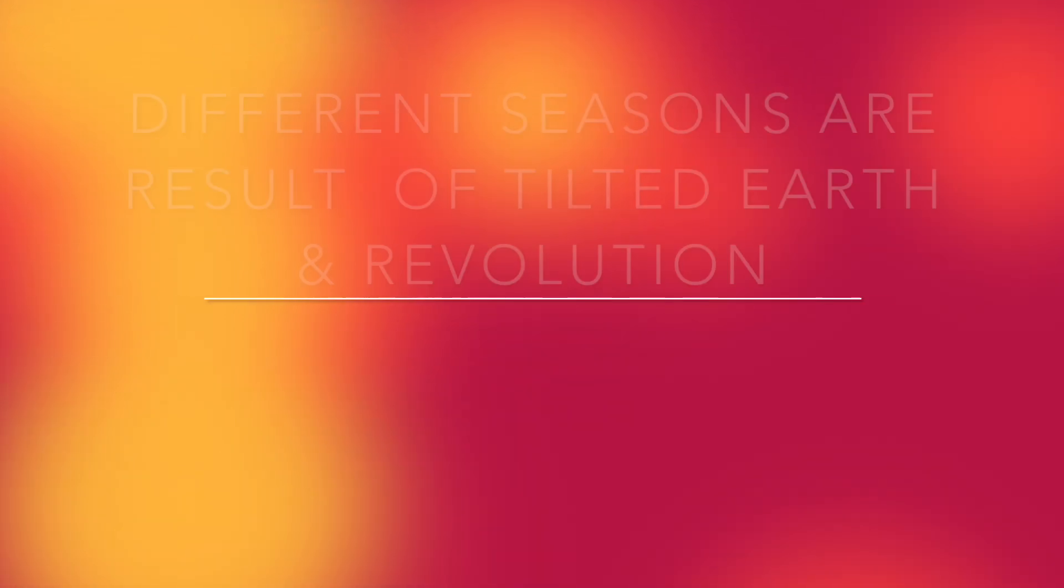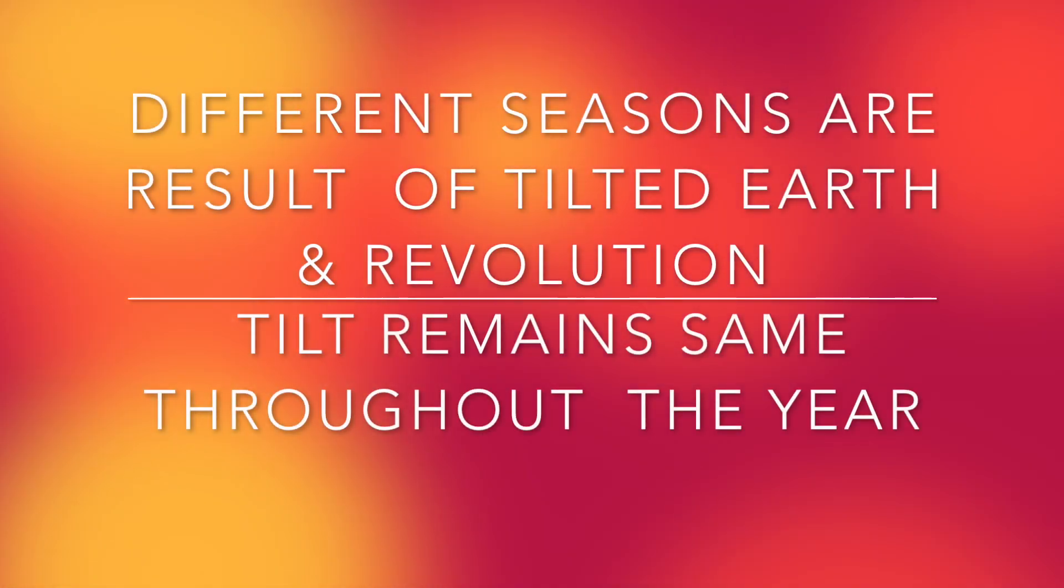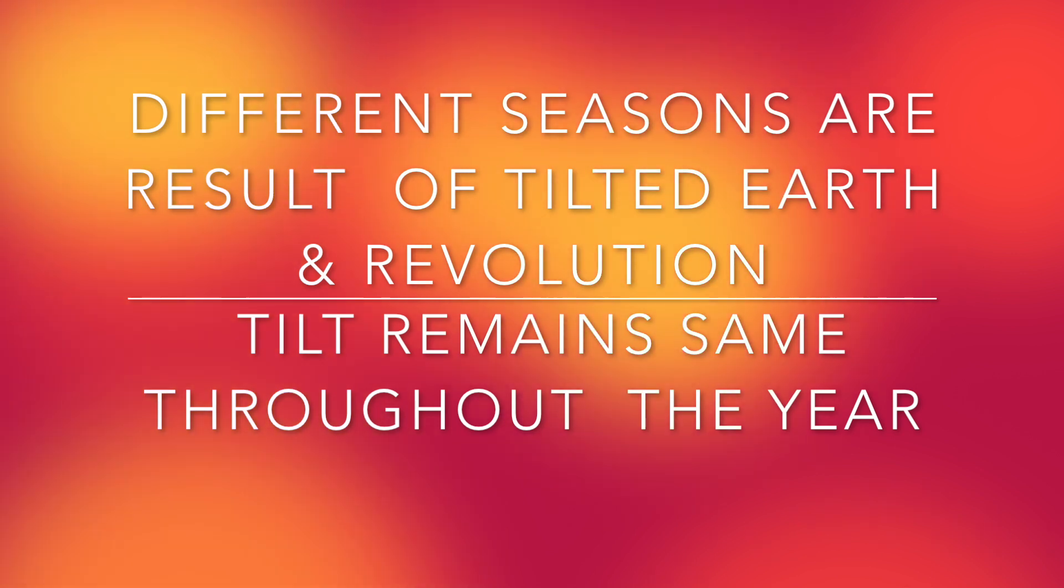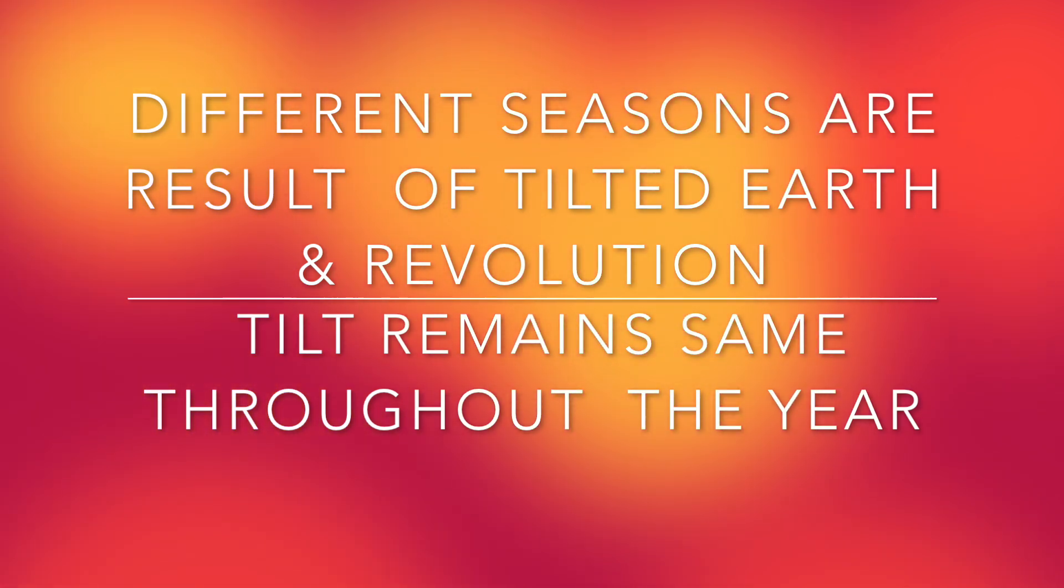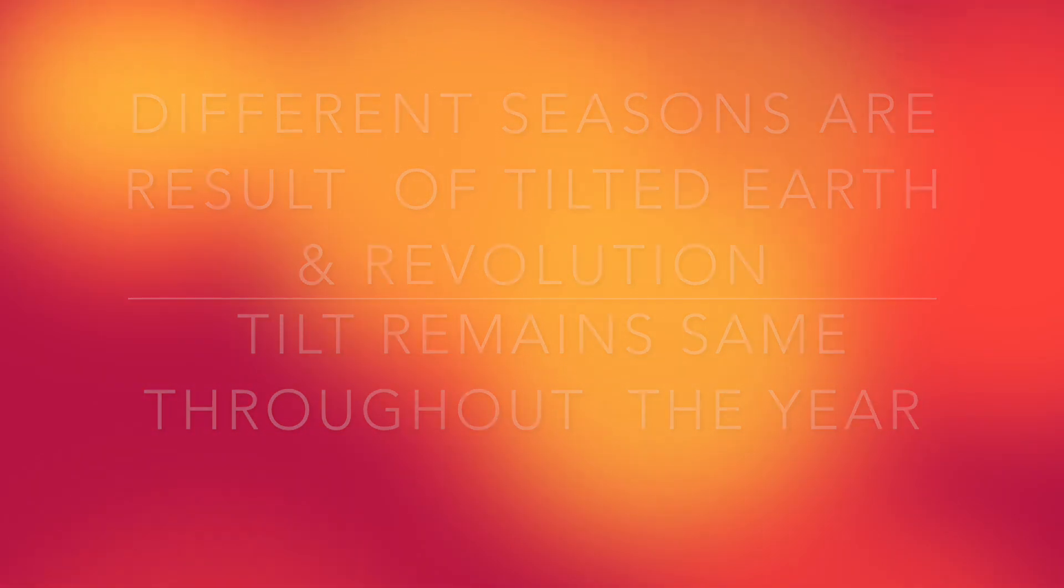Different seasons are the result of tilted Earth and revolution. That means the tilt of the Earth remains the same throughout the year. Earth is rotating on its own axis throughout the year.